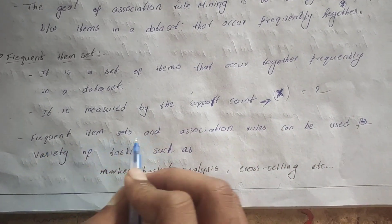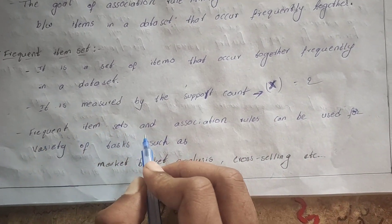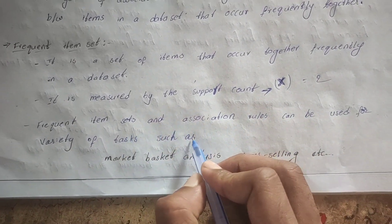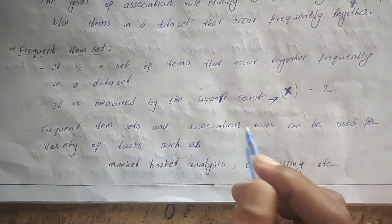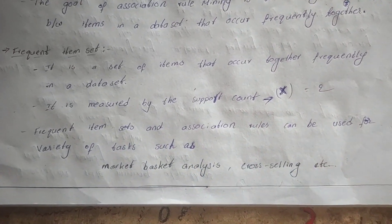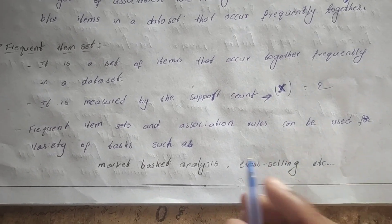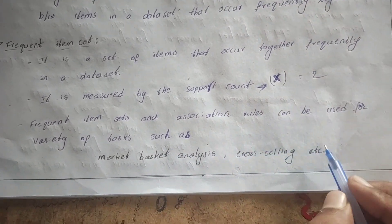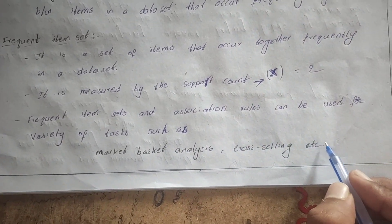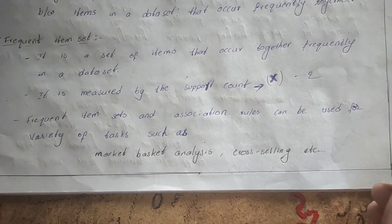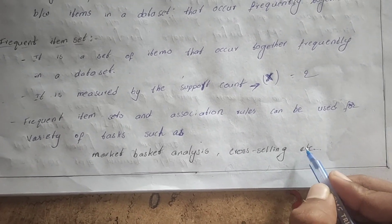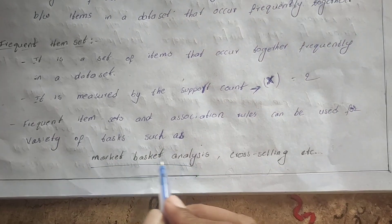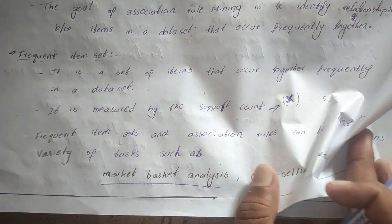Frequent item sets and association rules can be used for a variety of tasks such as market basket analysis, cross-selling, and recommendation systems. First, we will discuss market basket analysis.